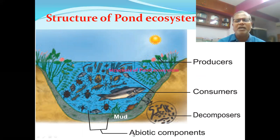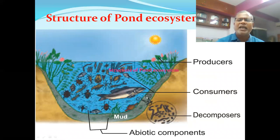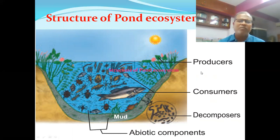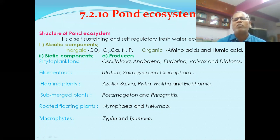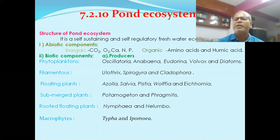A pond acts as an ecosystem because it possesses producers, consumers, and decomposers — these come under biotic components. Soil, water, temperature, and pH come under abiotic components. The interaction between abiotic and biotic components of the pond forms what we call a pond ecosystem. It is a self-sustaining and self-regulatory freshwater ecosystem.